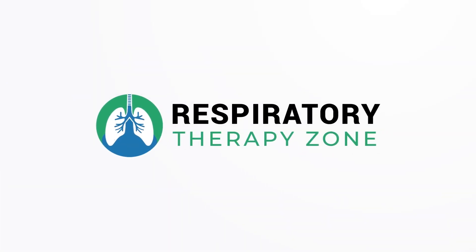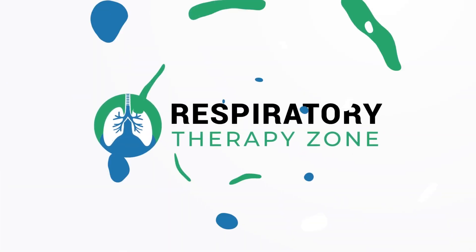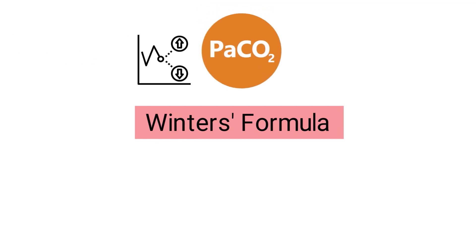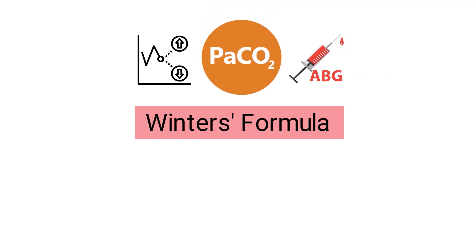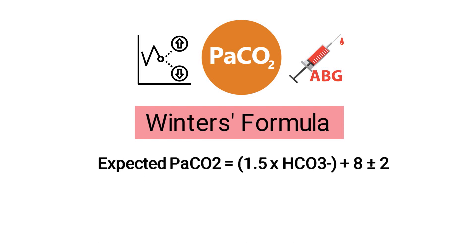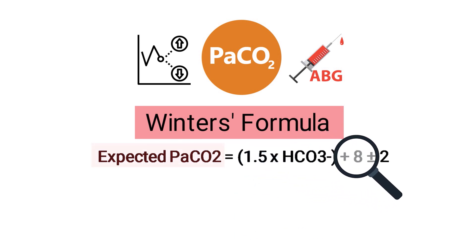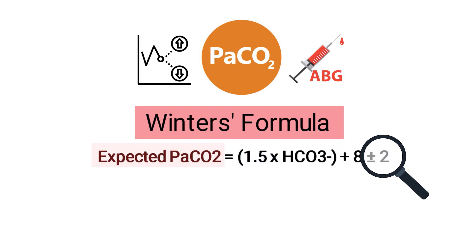Winter's formula is used to calculate a patient's predicted PaCO2 based on their ABG results. The formula uses the following equation: expected PaCO2 is equal to 1.5 times the bicarb plus 8, plus or minus 2.